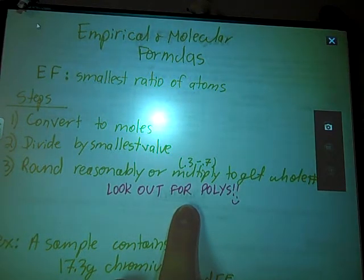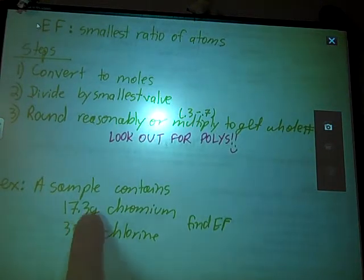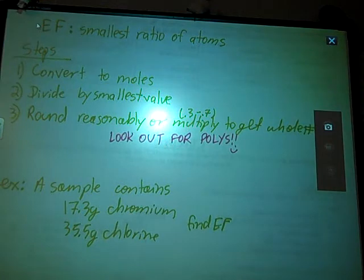One other scenario I should mention is occasionally you will be given percents. So it might say, instead of, in this example it gives us grams of chromium, it might say that a sample contains 17.3% chromium and 35.5% chlorine. Well, all you do in a scenario like that is assume that this is out of 100 grams and you simply replace the percent sign with grams. And that's it.